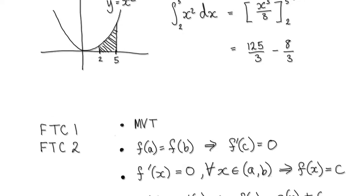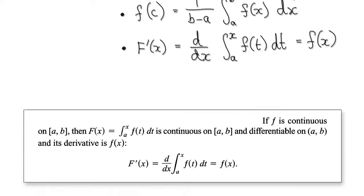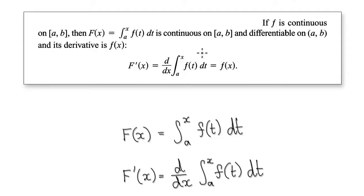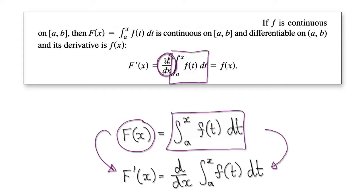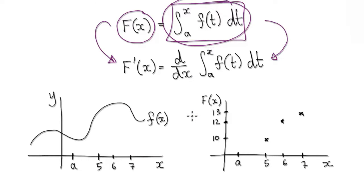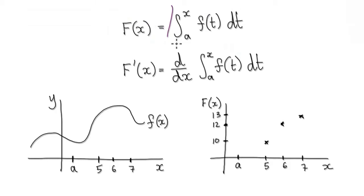Following on from our previous video, we were trying to understand the fundamental theorem of calculus part 1, and we got to the stage where we understood one component. We created a new function defined by an integral, where it gives us an area from a to x. For any given x, you can work out the area from a to x.